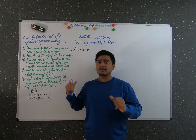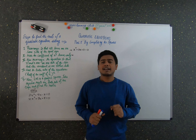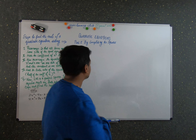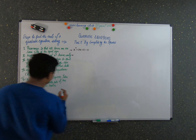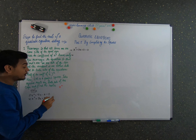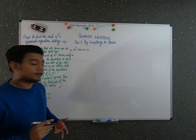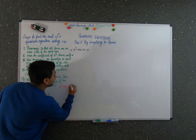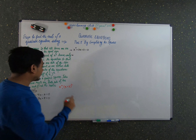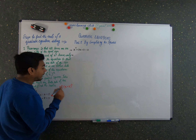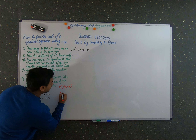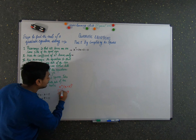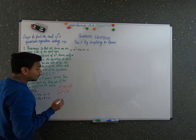Before starting with the section on completing the square, let's understand what perfect squares are. For example, x squared is a perfect square — these are completely divisible and are called perfect squares. Similarly, (x + 3) squared is also an example of a perfect square, where you can completely find the roots.